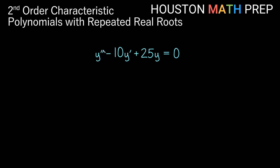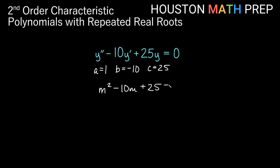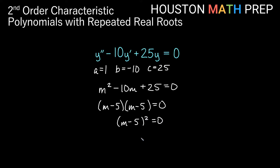Our next example: y'' - 10y' + 25y = 0. Here a = 1, b = -10, c = 25. The characteristic polynomial is m² - 10m + 25 = 0, which factors as (m-5)² = 0. Setting m - 5 = 0 gives m = 5 with multiplicity 2, a repeated real root. The solution is y = c1·e^(5x) + c2·x·e^(5x).